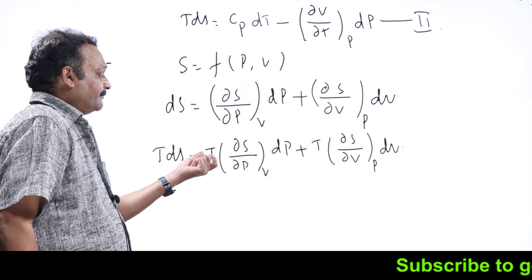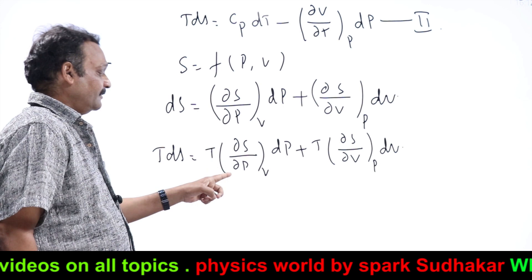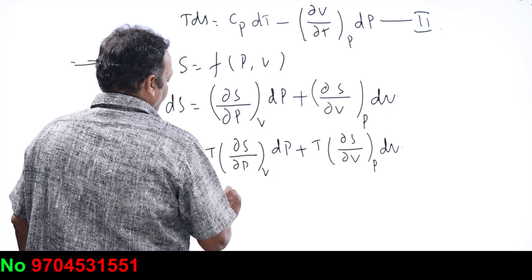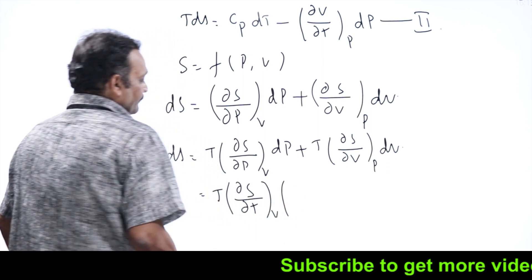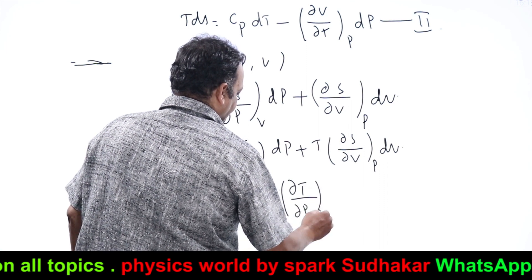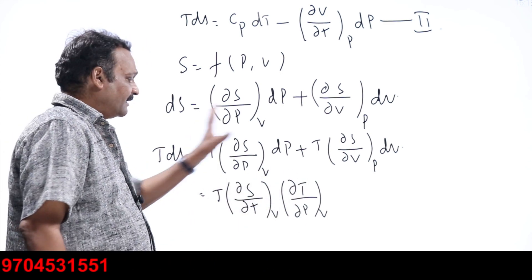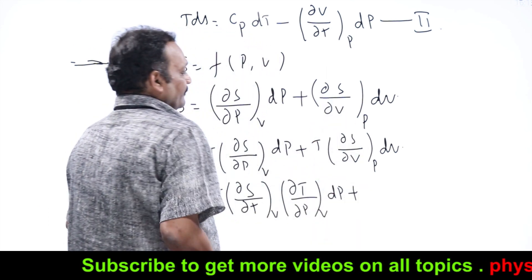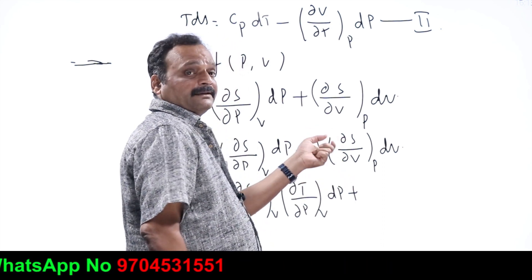To bring temperature into the denominator, we use a chain rule. Write T·(∂S/∂P)ᵥ as T·(∂S/∂T)ᵥ·(∂T/∂P)ᵥ so that ∂T cancels, leaving (∂S/∂P)ᵥ unchanged. Similarly, write T·(∂S/∂V)ₚ as T·(∂S/∂T)ₚ·(∂T/∂V)ₚ. Now T·(∂Q/∂T)ᵥ = Cv and T·(∂Q/∂T)ₚ = Cp.